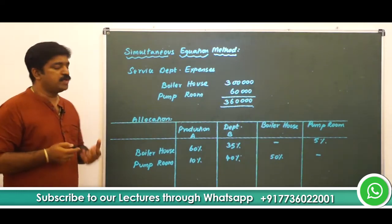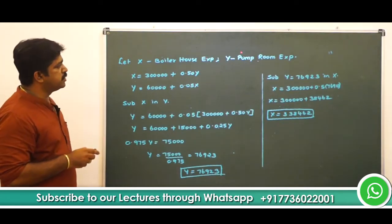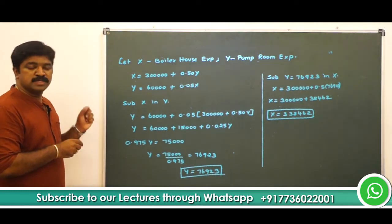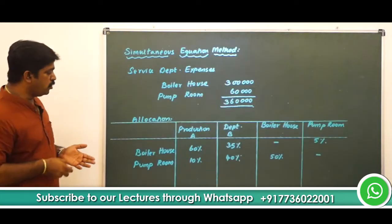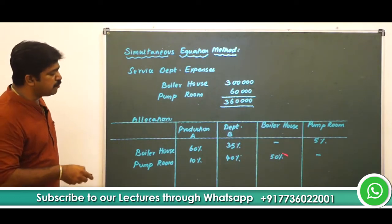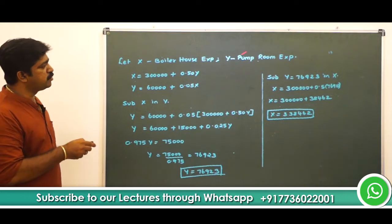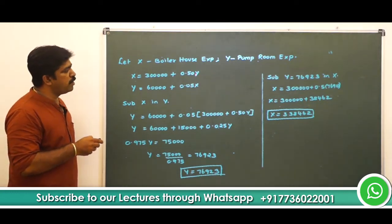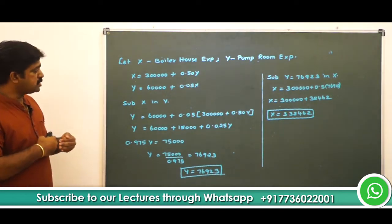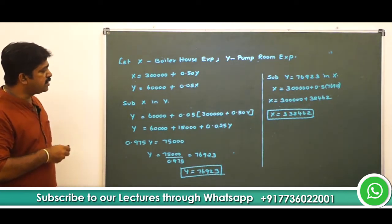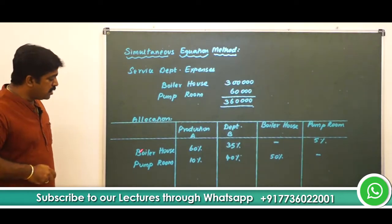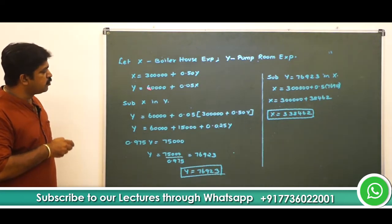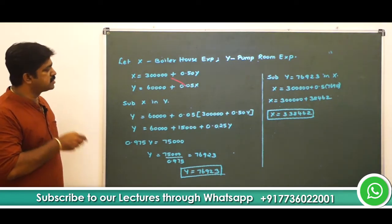That is why we frame equations. Let x be the boiler house expense and y be the pump room expense. Boiler house expense x is not merely 3 lakhs — it also includes some expense arising from pump room. Since 50% of pump room expenses are attributable to boiler house, x = 3,00,000 + 0.5y. Pump room expense y = 60,000 + 5% of boiler house expense.